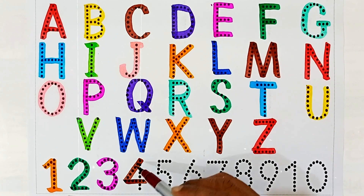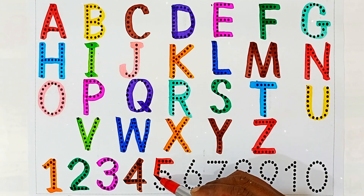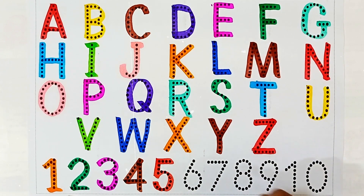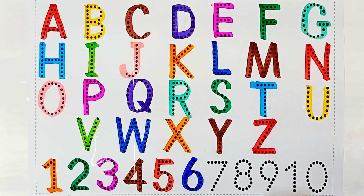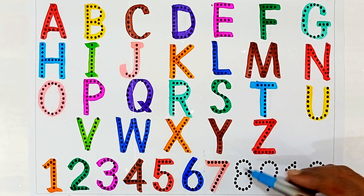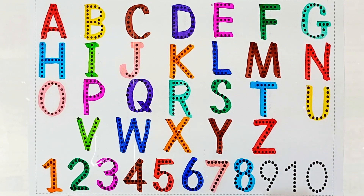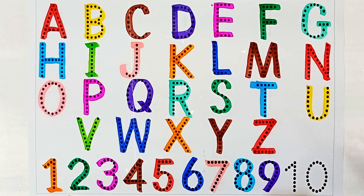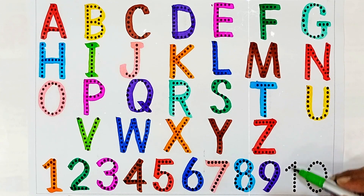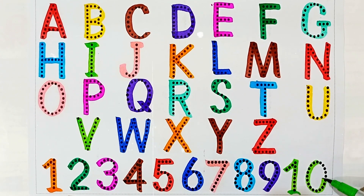Is ke baad four — this is number four, this number name is four. Five — this number name is five. Six — this number name is six. Seven — this number name is seven. Eight — this number name is eight. Nine — this number name is nine. Ten — this number name is ten. One and zero: ten.